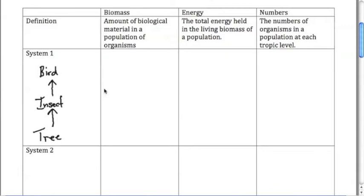Now if we showed the biomass in this example we could assume that the tree has a large biomass and it's going to have the biggest base on this pyramid. Insects obviously if you added up their total biological material they're going to be less than the tree and the same thing for the birds.